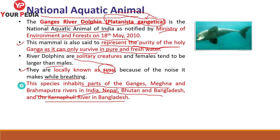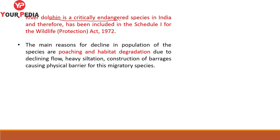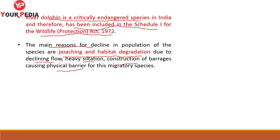The national heritage animal of India is the elephant, declared in October 2010 by the Government of India. Its scientific name is Elephas maximus indicus. India is home to 60% of elephants in Asia. The Elephant Task Force recommended the special status for elephants, saying the move will help protect Asia's largest mammal.